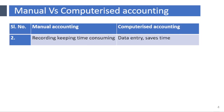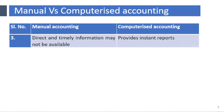In manual accounting, recording data entry takes more time, whereas in computerized accounting it takes less time. Direct and timely information may not be available in manual accounting, whereas in computerized accounting instant reports are available.